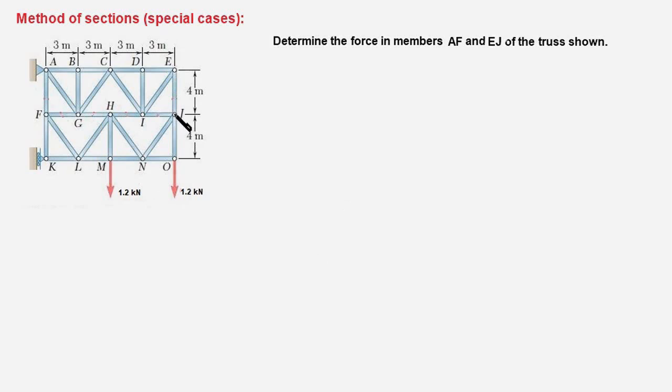I'm sure by just looking at the truss diagram you would have guessed that this truss belongs to the category of special cases because any section that you pass through member AF or EJ is going to intersect more than three members of the truss. So this is a special case and this requires some special handling.